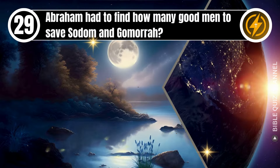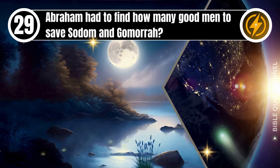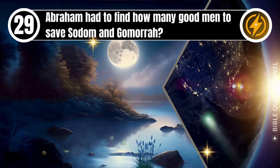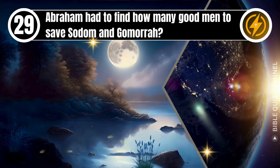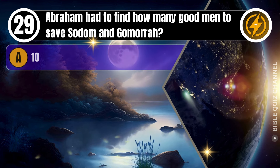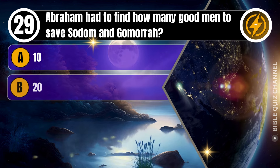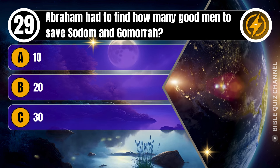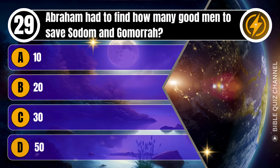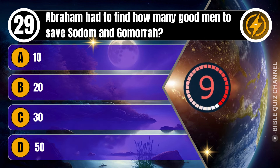Question 29. Abraham had to find how many good men to save Sodom and Gomorrah? A. 10. B. 20. C. 30. D. 50. You get 10 seconds.